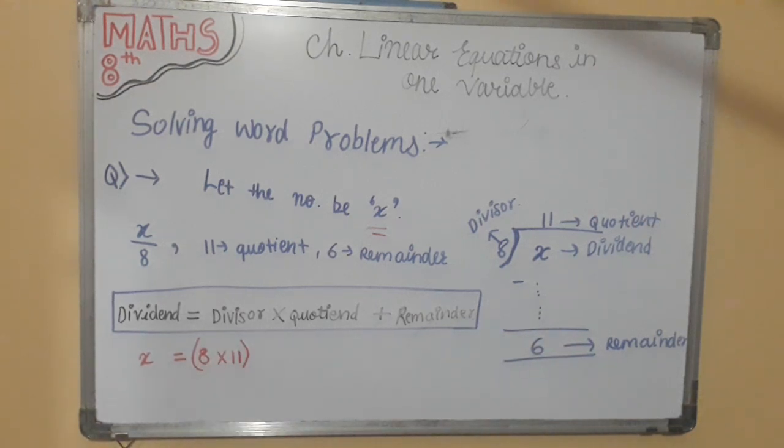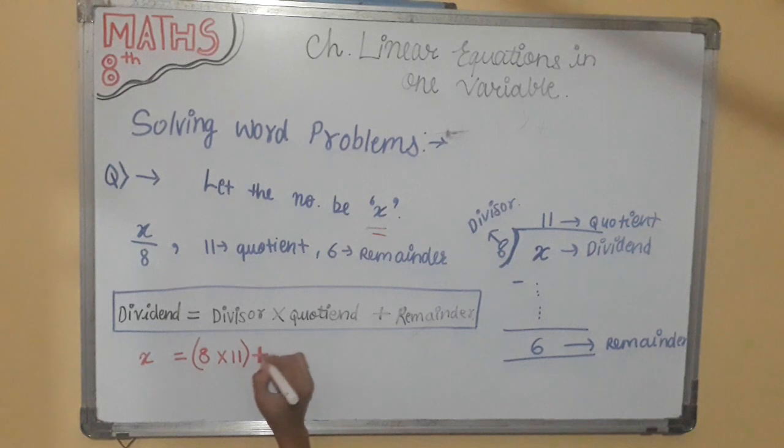After that we will put bracket if necessary. After that plus sign as it is. And remainder we know 6.